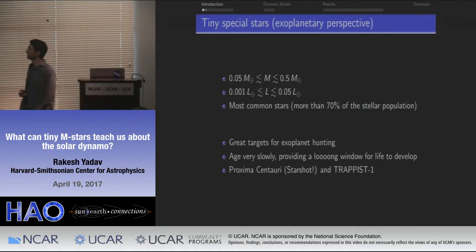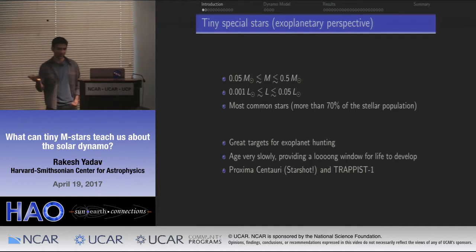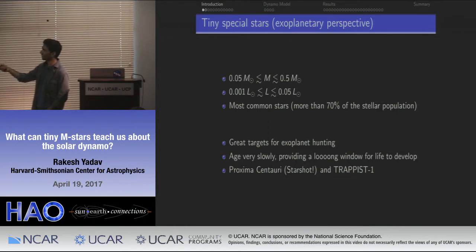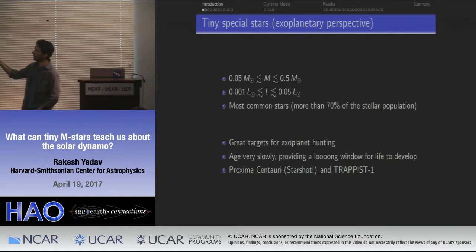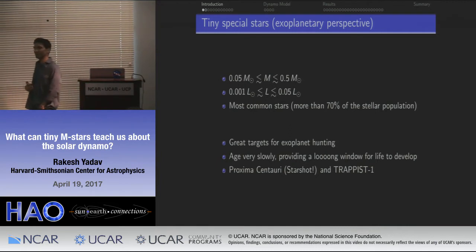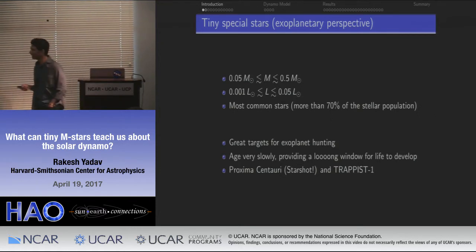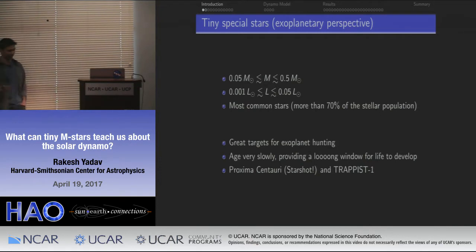First, the exoplanetary perspective. Let me define M-stars. The mass ranges from about 5% to 50% of the solar mass — that spans the whole spectral type of M-stars. In terms of luminosity, they are really, really dim — about 5% to 0.1% of the solar luminosity. Interestingly, about 70% of the stellar population in our galaxy is just M-stars, so when somebody says most stars are M-stars, it's not really an exaggeration.